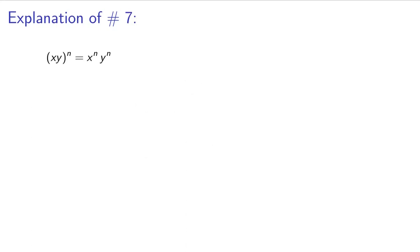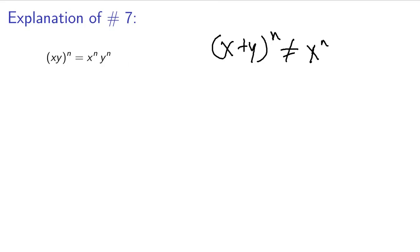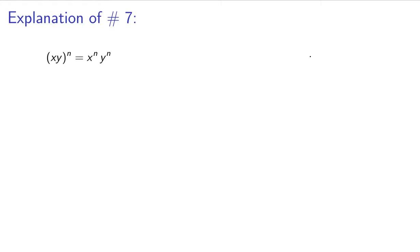Now let's go on to number seven: the quantity x times y, all to the n, equals x to the n times y to the n. Do not confuse this with x plus y to the n, because that has a plus and means something completely different. The way you would expand that is using something called Pascal's Triangle, or the binomial expansion theorem. And do not make the mistake of saying that x plus y to the n equals x to the n plus y to the n — that is a big mistake that a lot of people make, and your teacher will nail you for it. There's a good chance they will count the entire problem wrong without even looking at the rest of it if you make that mistake.